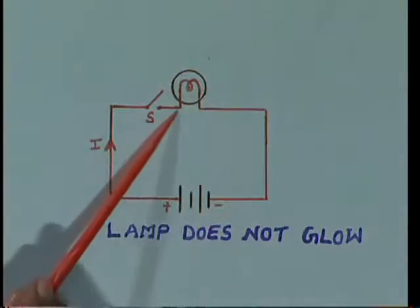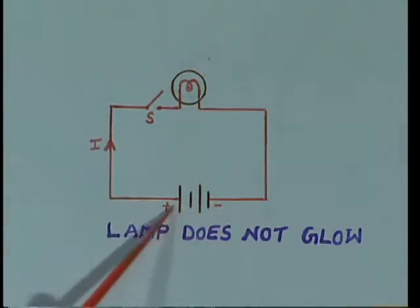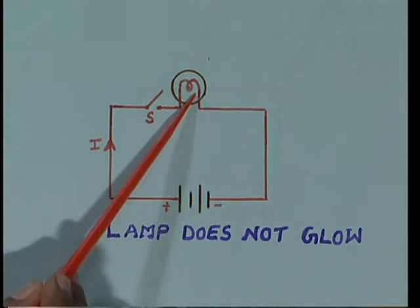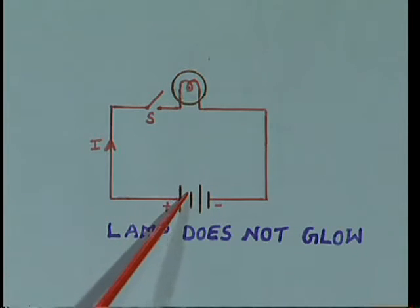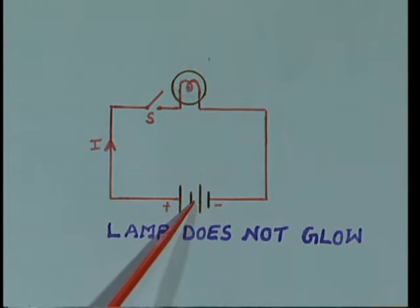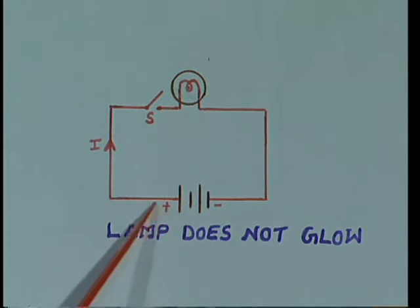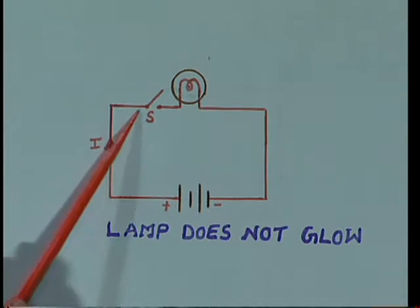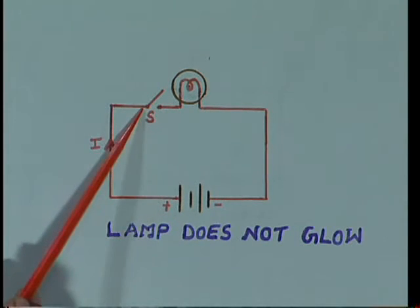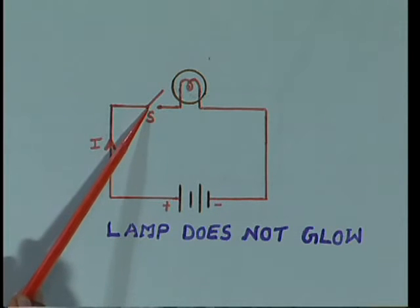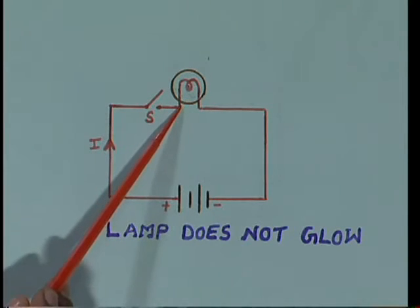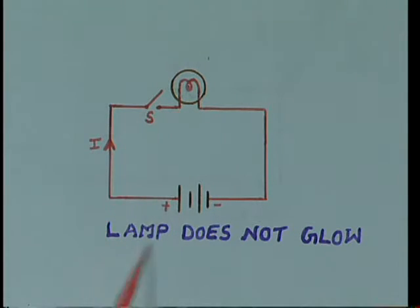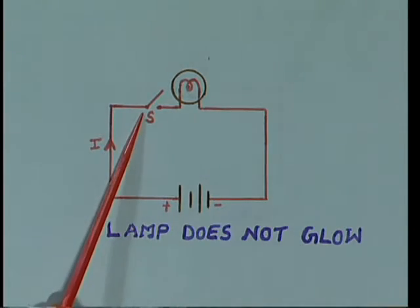This is a circuit diagram — a lamp connected through a switch to a battery. When it is connected to the battery, current passes to the lamp, but here the switch is open. Therefore current will not pass to the lamp; therefore the lamp does not glow. Lamp does not glow because the switch is open.